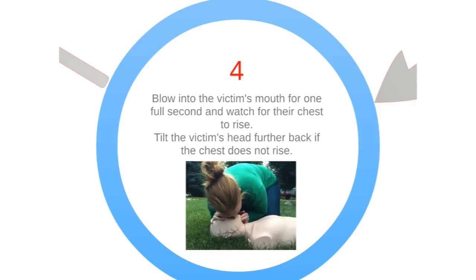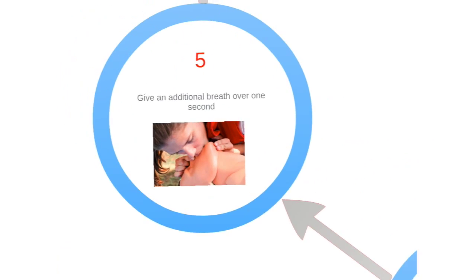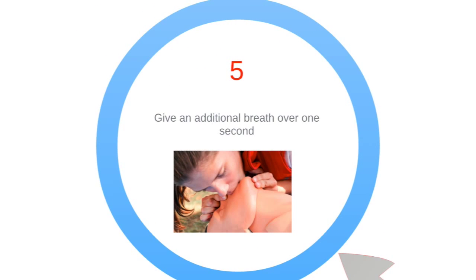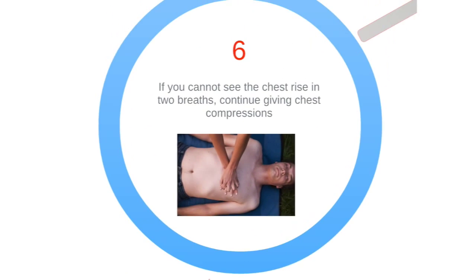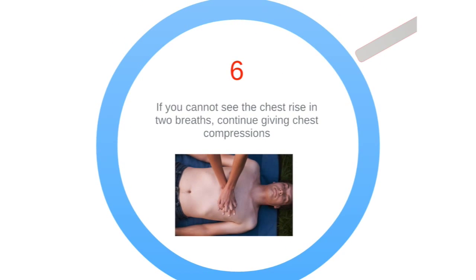Blow into the victim's mouth and watch the chest. If it doesn't rise, you may need to retilt the head or unblock the airway, then give an additional breath. Make sure that these breaths are the duration of a full second. If the chest doesn't rise in two breaths, continue giving chest compressions.